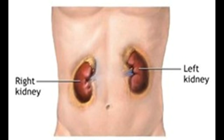Although some stones in the ureters can be treated with ESWL, ureteroscopy may be needed for mid and lower ureter stones. No incision is made in this procedure. Instead, the surgeon passes a small fiber optic instrument called a ureteroscope through the urethra and bladder into the ureter. The surgeon then locates the stone and either removes it with a cage-like device or shatters it with a special instrument that produces a form of shock wave. A small tube or stent may be left in the ureter for a few days to help urine flow. Before fiber optics made ureteroscopy possible, physicians used a similar blind basket extraction method, but this technique is rarely used now because of the higher risks of damage to the ureters.